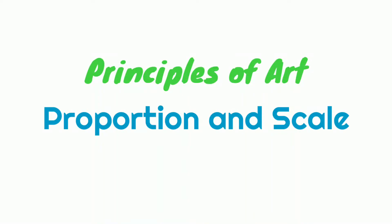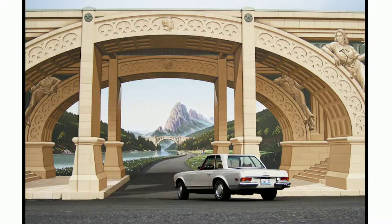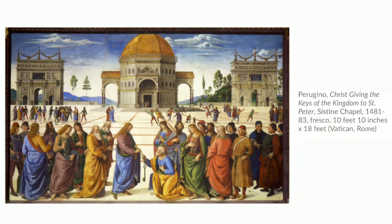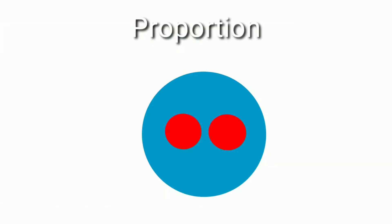In this video we are going to learn about proportion and scale. Proportion means the size relationship between various aspects of the same object, like the size of an eye in relation to the face. Scale, however, is the size relationship between various elements or objects — for example, the size of a human relative to a building.